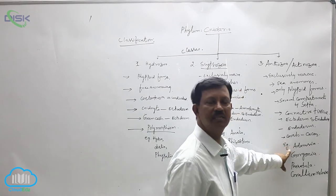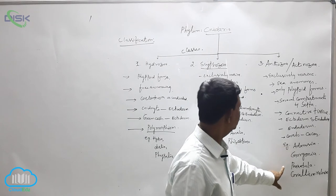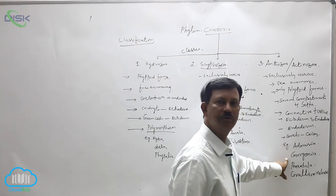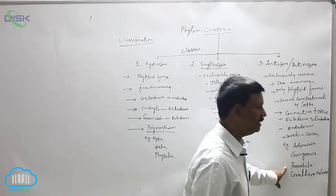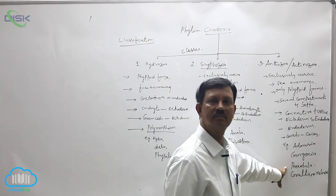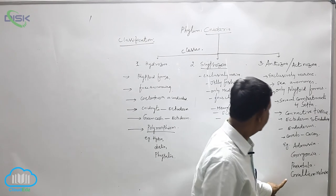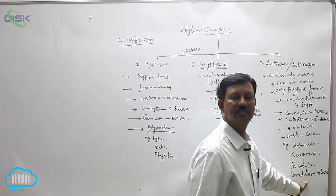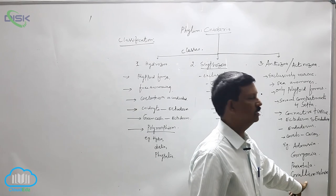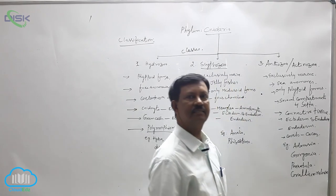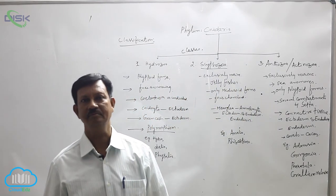Examples of Anthozoa are Adamsia, commonly known as sea anemone; Gorgonia, commonly known as sea fan; Pennatula, commonly known as sea pen; and Corallium rubrum, known as coral. This is the classification of phylum Cnidaria.